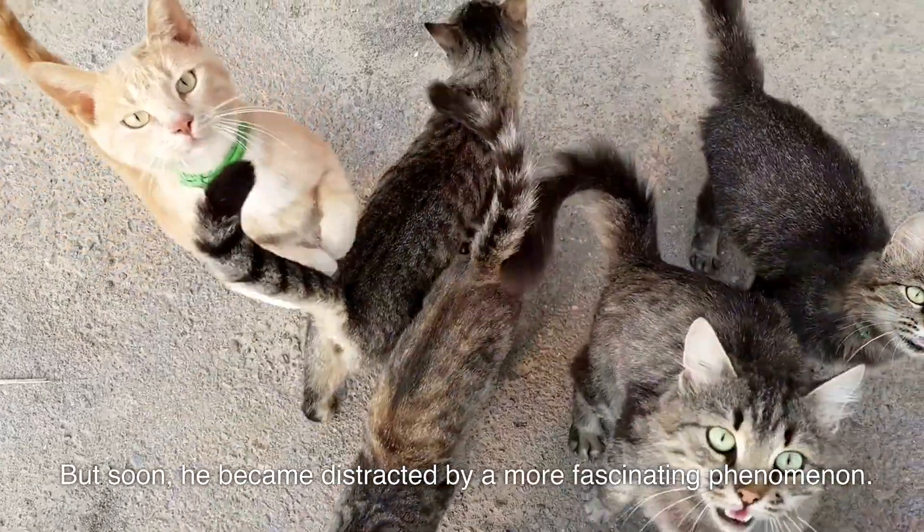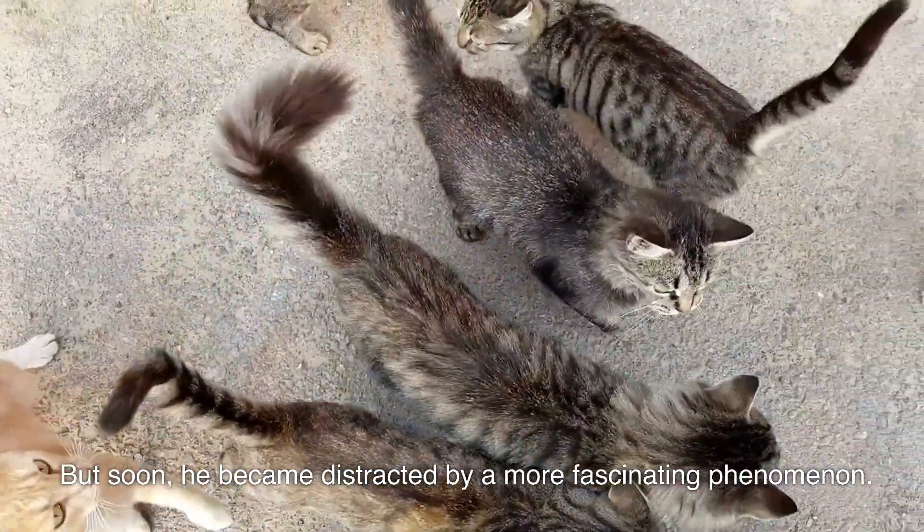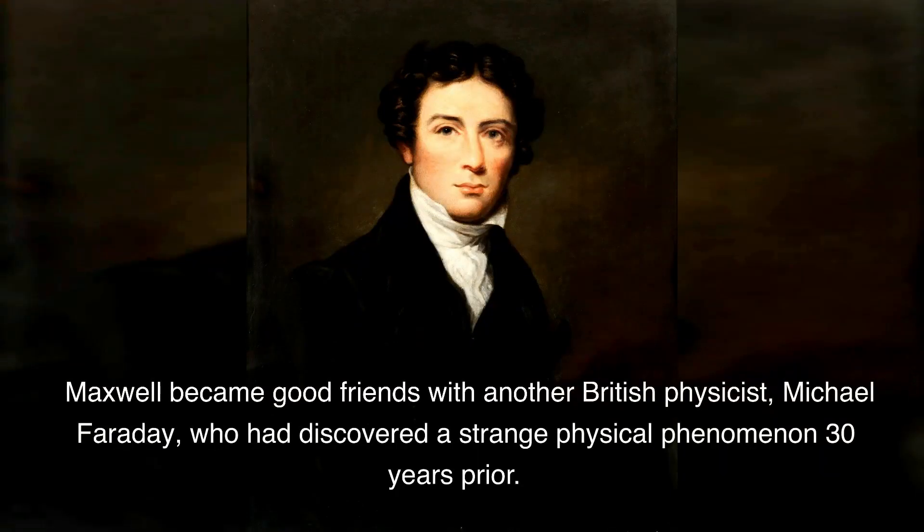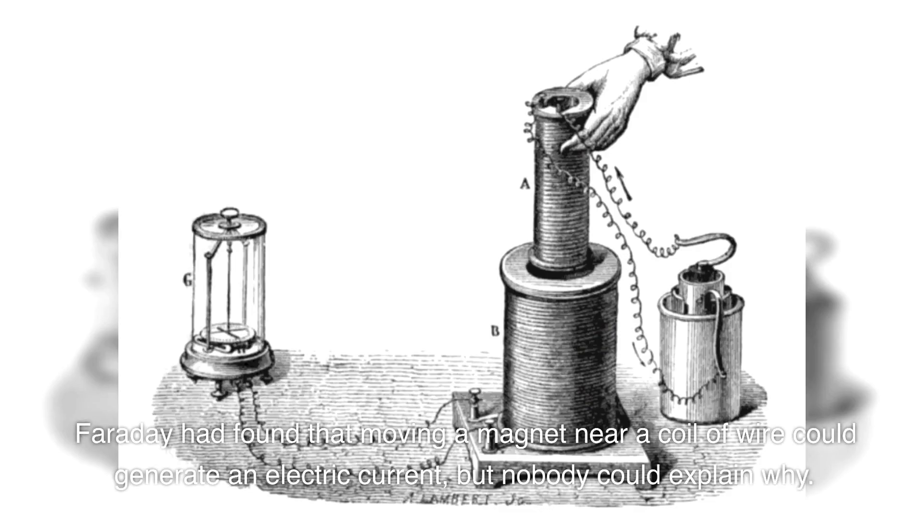Maxwell became good friends with another British physicist, Michael Faraday, who had discovered a strange physical phenomenon 30 years prior. Faraday had found that moving a magnet near a coil of wire could generate an electric current, but nobody could explain why.